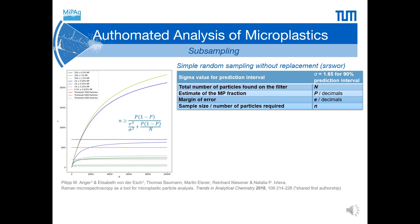But how many particles have to be analyzed to guarantee representative analysis of microplastics? To answer this question, we apply a method used for the prediction of election results, namely simple random sampling without replacement. The number of particles which have to be identified depends on the total number of particles on the filter, estimated microplastic content, margin of error, and confidence interval. Even if we have a million particles on the filter and a plastic fraction of only one percent, it will be sufficient to measure 7,000 particles to achieve representative results with a margin of error of 20 percent.